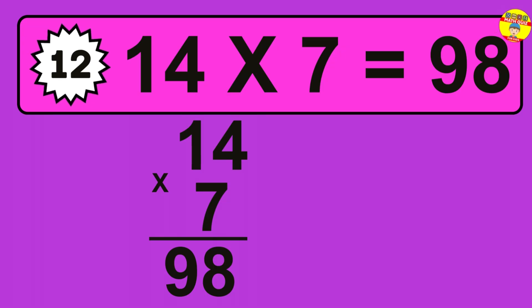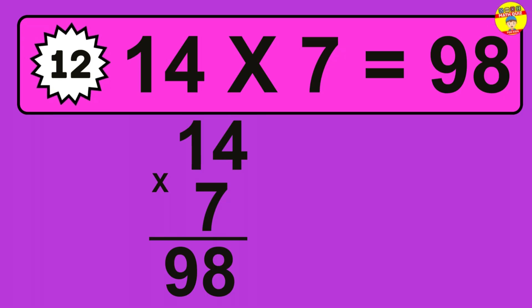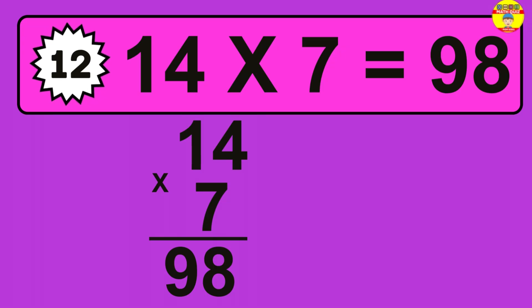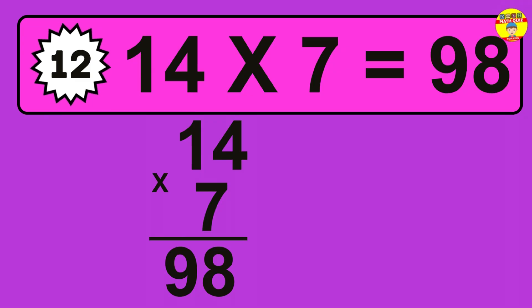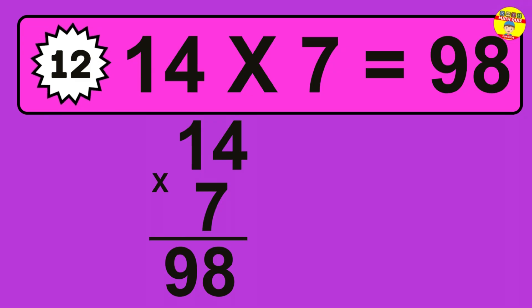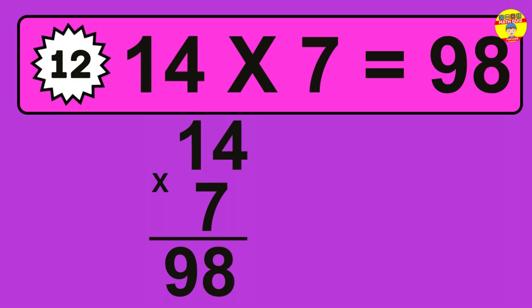Question 12. 14 times 7 equals what? The answer is 14 times 7 is 98. To calculate, we have 14 groups with 7 balls each one. So, how many balls do we have? 98 balls.